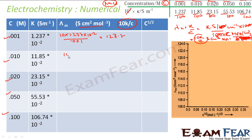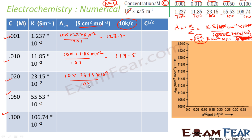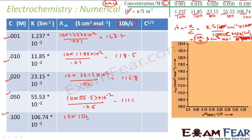For C = 0.01: 10 × (11.85 × 10⁻²) / 0.01 = 118.5. For C = 0.02: 10 × (23.15 × 10⁻²) / 0.02 = 115.8. For C = 0.05: 10 × (55.37 × 10⁻²) / 0.05 = 111.1. For C = 0.1: 10 × (106.74 × 10⁻²) / 0.1 = 106.7 S·cm²/mol.